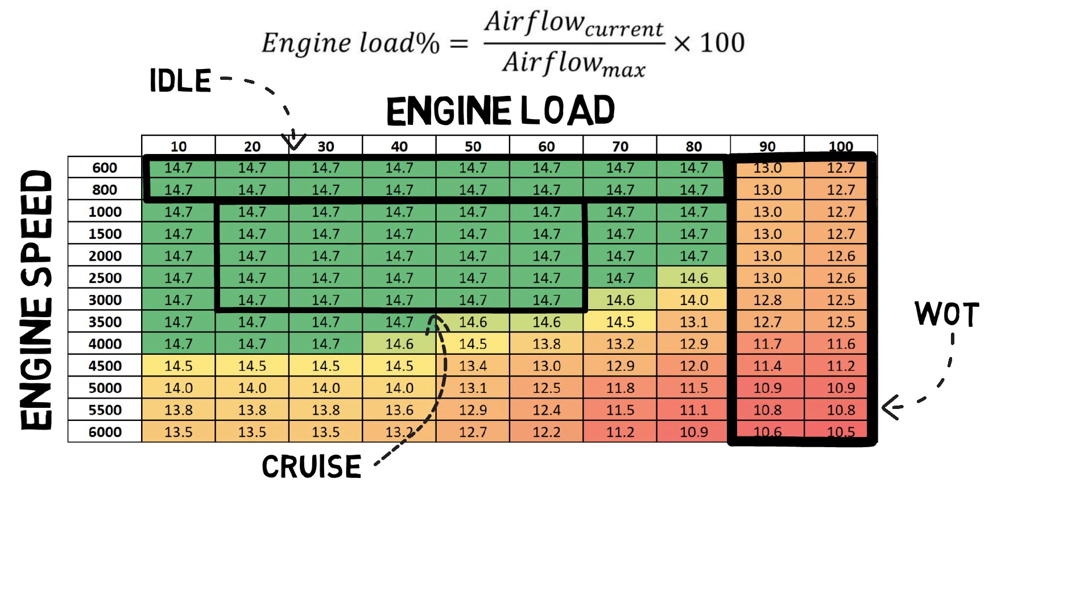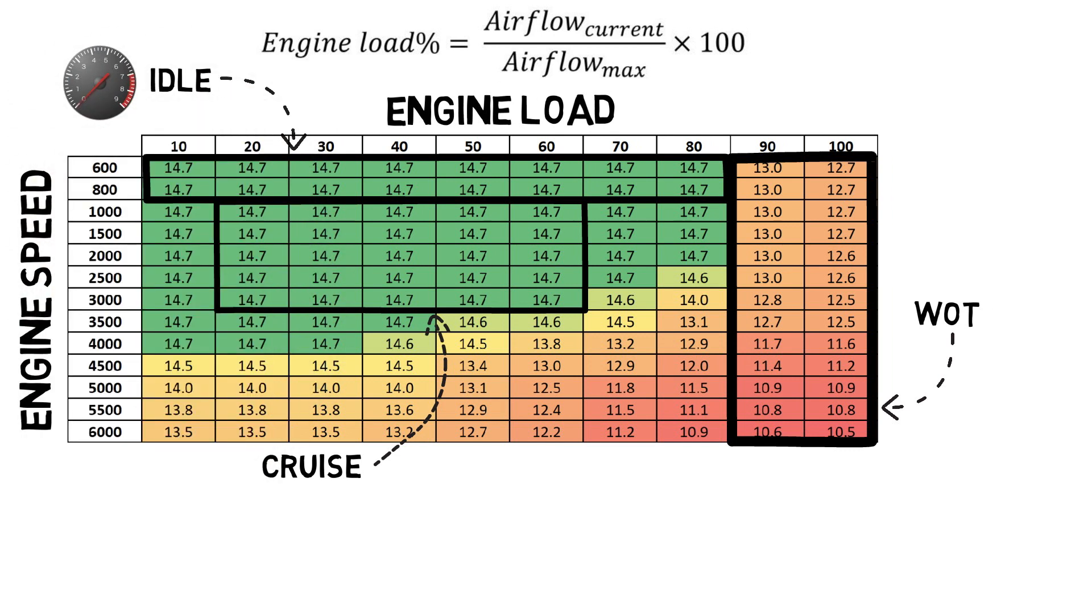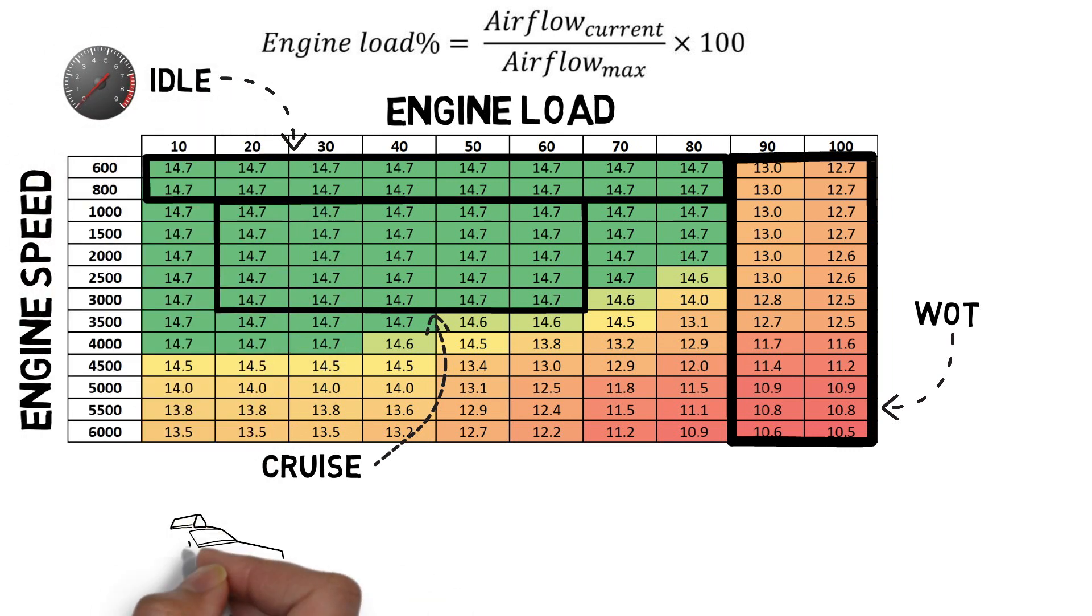Idle is the rotational speed at which the engine runs when it's disengaged from the drivetrain, so it consists of the lower RPM region. Cruise range is the area where we mostly operate in normal day-to-day driving. This is typically in the low to mid portion of the map.